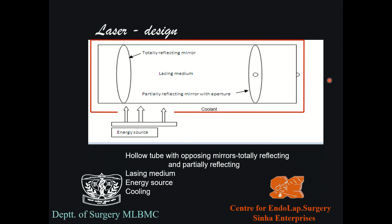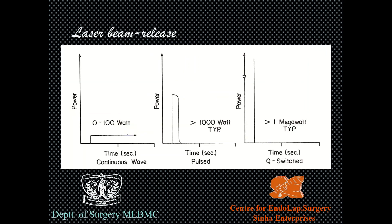The whole device is a chamber with atoms reflecting between two mirrors — one totally reflecting, one partially reflecting — because the energy source has pushed them to a high energy state. When the energy source stops, atoms release energy channeled through a small aperture for a variable time period, delivering photons onto the application site. A coolant passes through an outer sheet to keep the inner tube cool, since very high temperatures are generated.